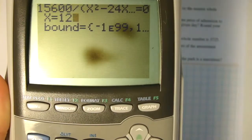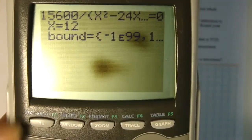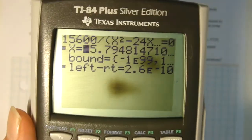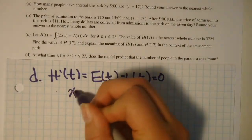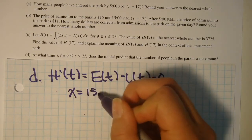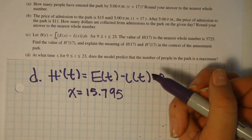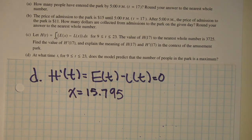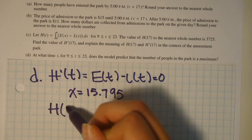And now you will want to make a guess. So guess what you think x will be. And instead of pressing enter, you want to press alpha and solve. And that should get you your answer. It's telling us that x equals 15.794. So x equals 15.795, actually. And now, with this, we need to test all of our points. So this is our critical number, so we will test this.